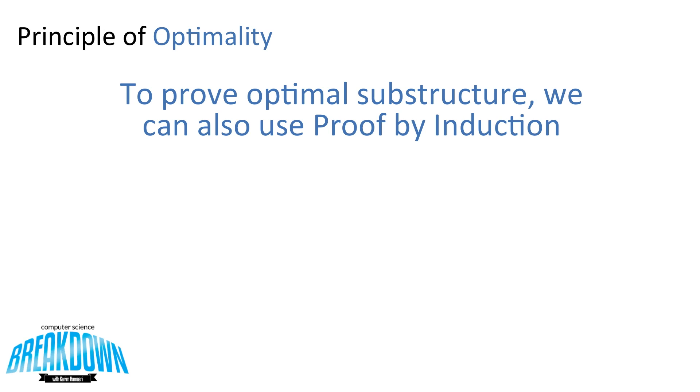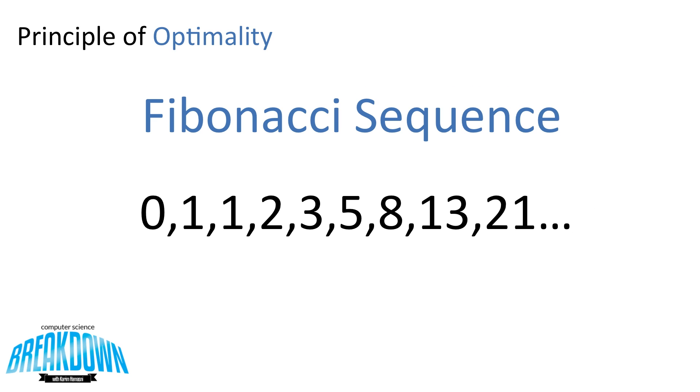Now, we can also prove optimal substructure using proof by induction. So let's take a look at the example from the previous video for the Fibonacci sequence. For those that haven't seen the previous video, the Fibonacci sequence is a series of numbers where the next number in the series is equal to the previous two numbers.